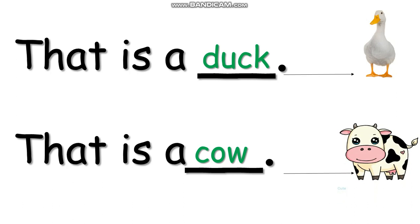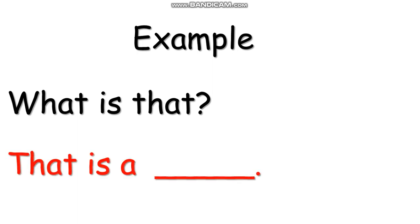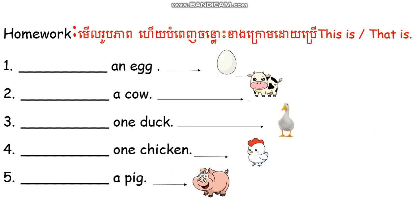Okay, thank you. Now we continue with the example. What is that? Can you see the long arrow? Can you tell me what is that? Very good. That is a chicken. That is a chicken. Now let's see our homework. Can you see? I want you to copy it into your exercise book and do it. Understand? Thank you, students. I hope all of you can do it by yourself. Use 'This is' and 'That is'. Understand? Thank you, students. Goodbye.